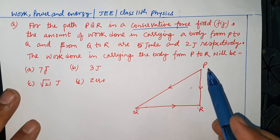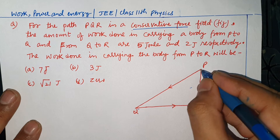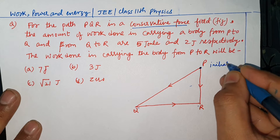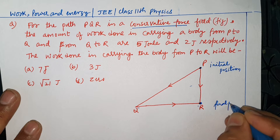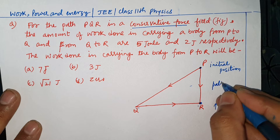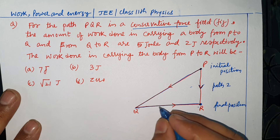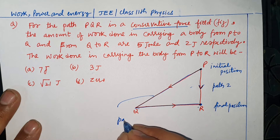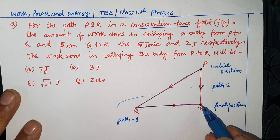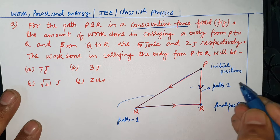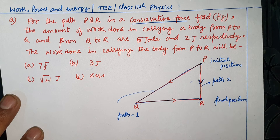The question asks for the work done in carrying a body from P to R. So, P ko hum initial position maan sakte hain aur R ko final position. Ek path ko hum Path 2 maan sakte hain — P se Q se R — aur poore direct path ko Path 1. Dono paths ka initial position P aur final position R hai, lekin paths alag hain. Yahan conservative force lag raha hai.